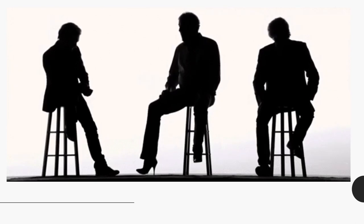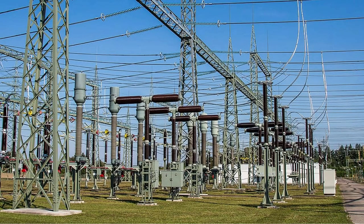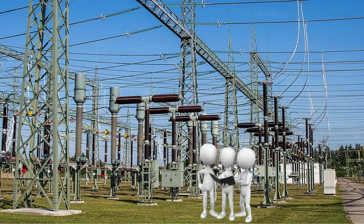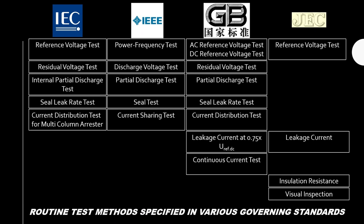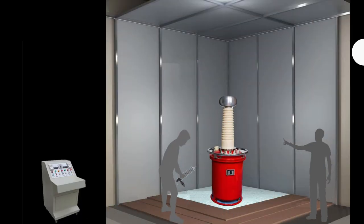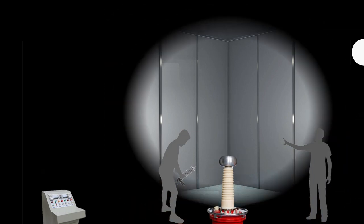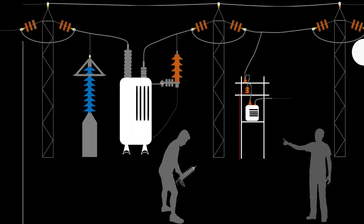Many times customers have asked colleagues in sales and product management about how to check the health of a lightning arrester before installation, or how to assess the health of ones already installed at the site. All governing standards for lightning arresters define routine tests done by every manufacturer for 100% of parts before dispatch, but if a customer wants to verify the same product before installation, it becomes challenging, because not all routine tests can be done at the site.